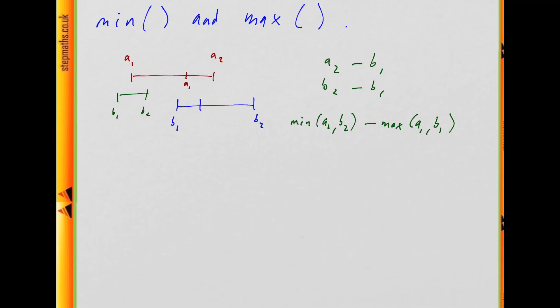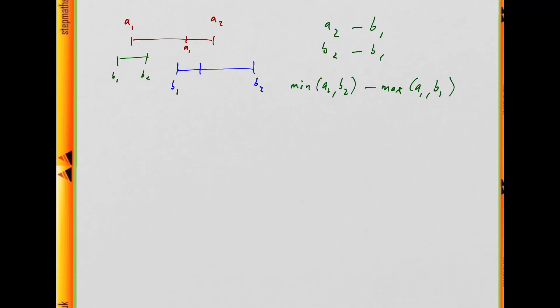What is a problem? The problem can come if there isn't an overlap at all. We could have a1 to a2 here, and then b1 to b2 here, and they don't overlap. What answer does this give in that case? It gives me the min of a2 and b2, so that's over here.